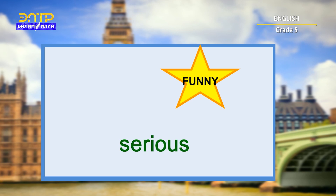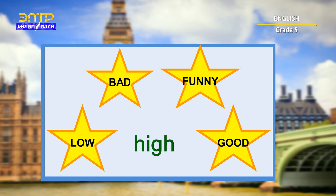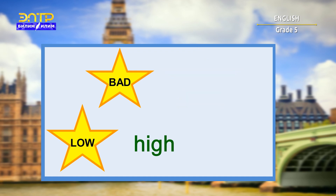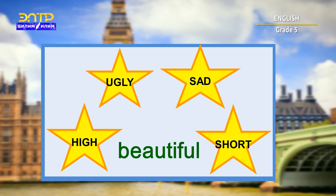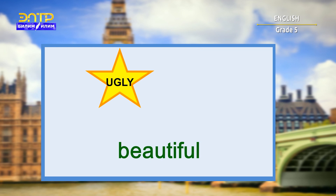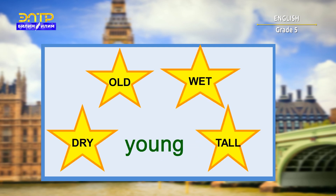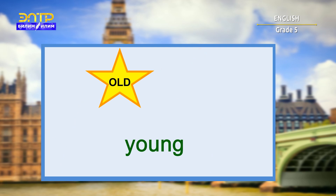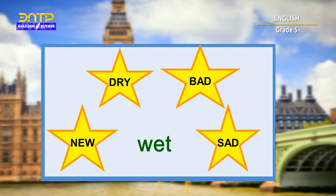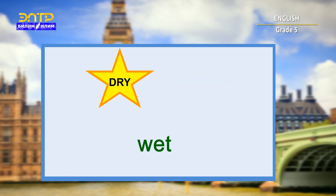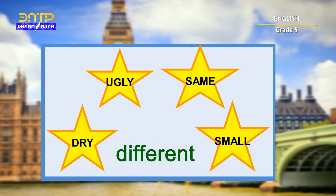Let's try one more time. What's the opposite of high? It's low. That's right. The next one: beautiful — ugly. Young — old. Wet — dry. Different — same. Excellent, children. Good job.